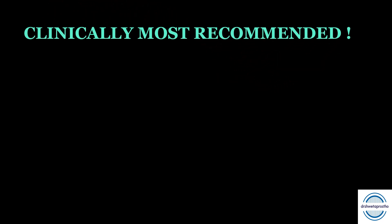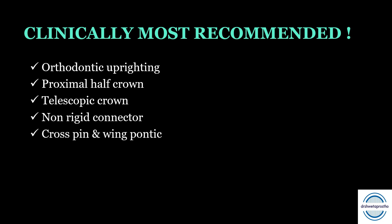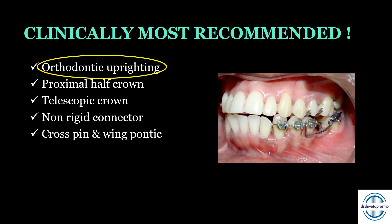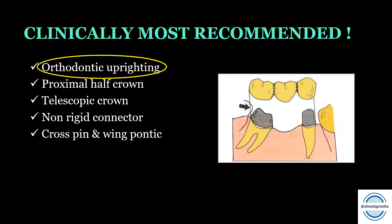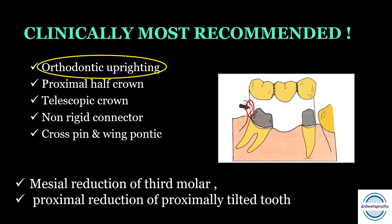Clinically, orthodontic uprighting should always be the choice offered to the patient, as it is biologically very acceptable with good results in three to six months. If that is not possible, the other four options are less ideal. Practically in our clinics, we do the mesial reduction of the third molar to form a path of insertion, and proximal reduction of the proximally tilted tooth — for which most of the time we will have to go for endodontic treatment of the tilted molar. This is how we manage tilted molar abutments in clinical practice.